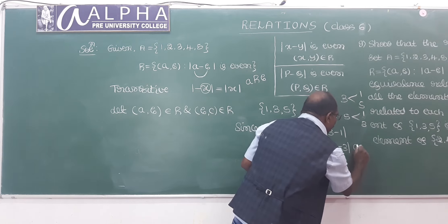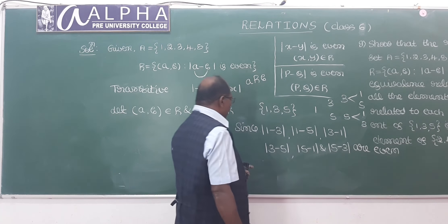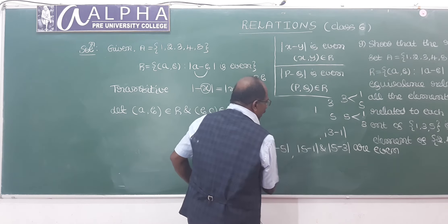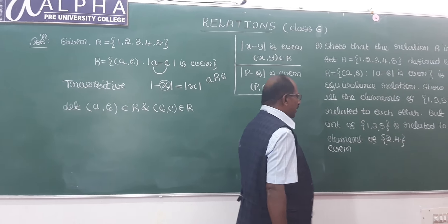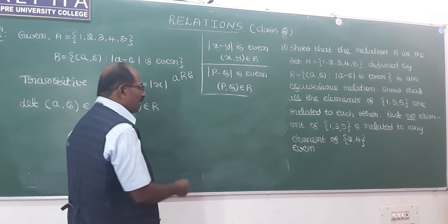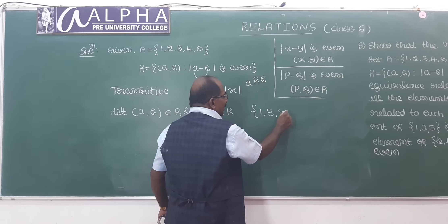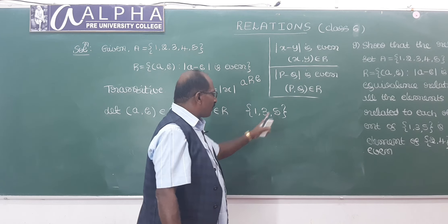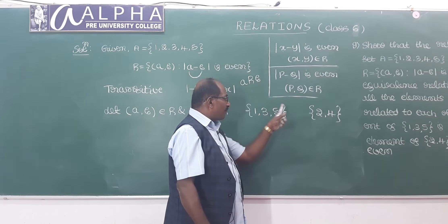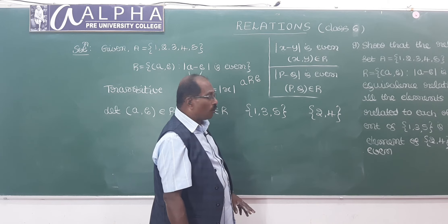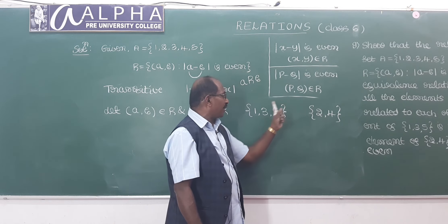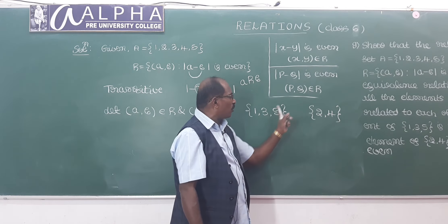Since all the elements of {1, 3, 5} are related to each other. Now we have to answer the second part: no element of {1, 3, 5} is related to any element of {2, 4}. The set {1, 3, 5} consists of odd integers, while {2, 4} consists of even integers. We need to show: 1 is not related to 2, 1 is not related to 4, 3 is not related to 2, 3 is not related to 4, 5 is not related to 2, and 5 is not related to 4.